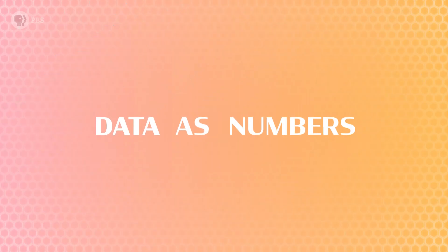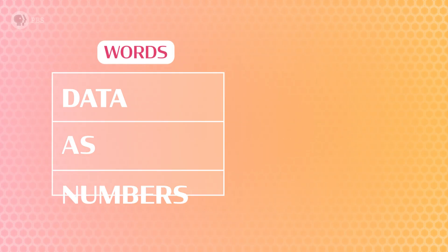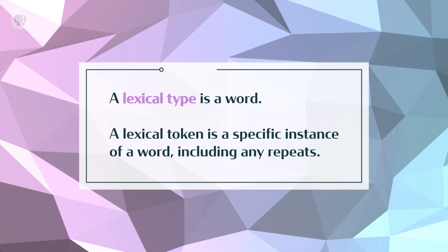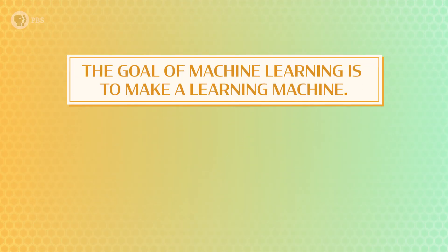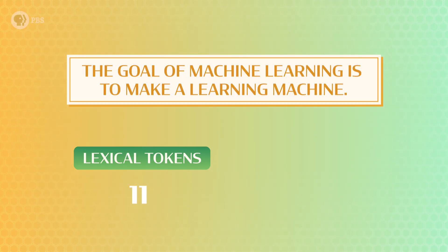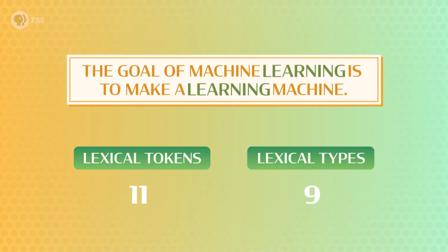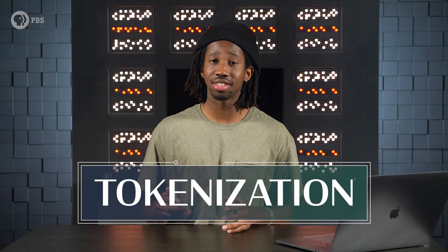Regardless, we still aren't done yet. Now we need to clean up and prep our data for the model — this is called preprocessing. Remember, a computer can only process data as numbers. So we need to split our sentences into words, and then convert our words into numbers. When we're building a natural language processing program, the term "word" may not capture everything we need. How many instances there are of a word can also be useful. So instead, we'll use the terms lexical type and lexical token. A lexical type is a word, and a lexical token is a specific instance of a word, including any repeats.